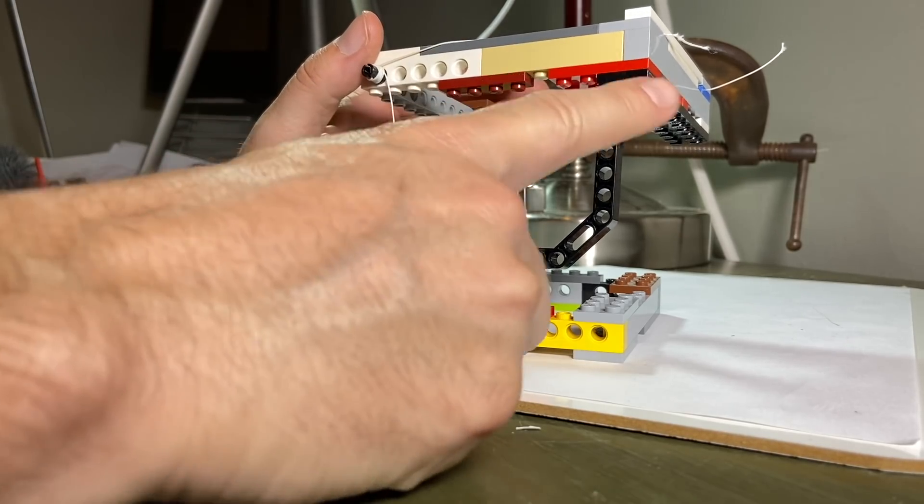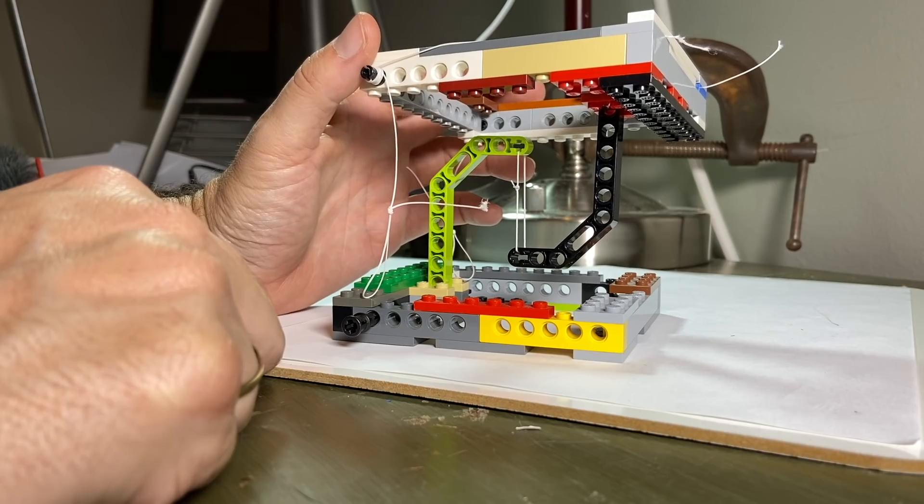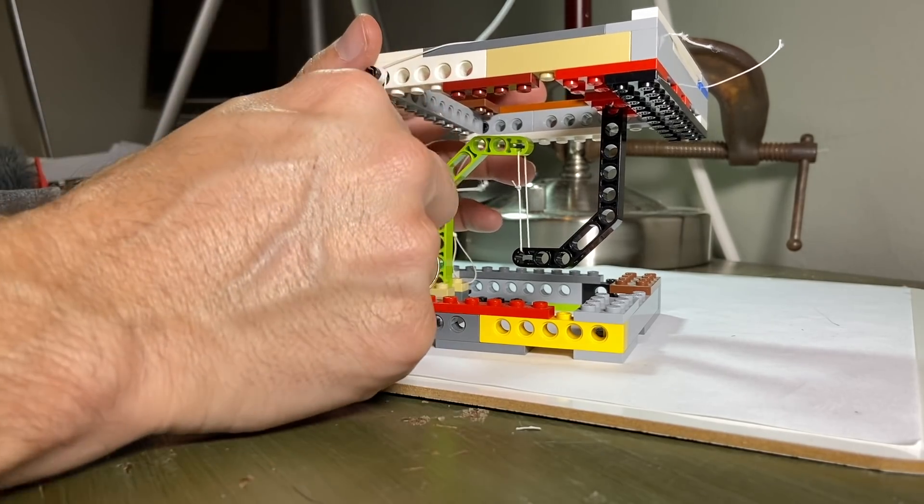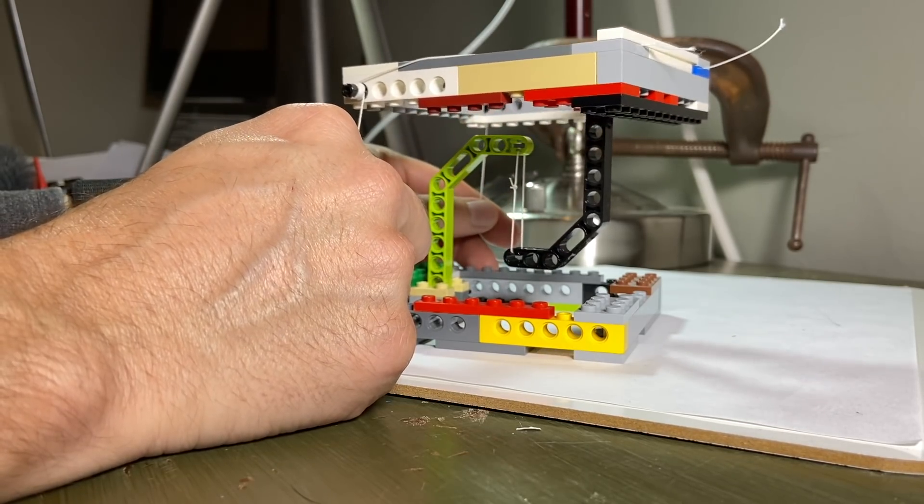Okay, some people will make them with strings on all four corners. That's fine, too. But if you do that, it's going to be much harder to set up, because you have to have these strings the right length, right? Or it'll tip over.